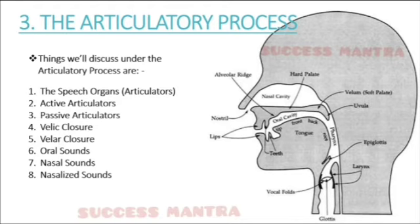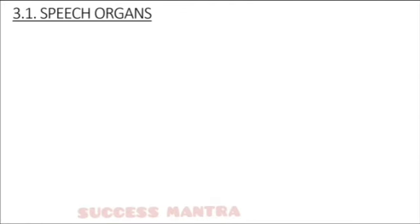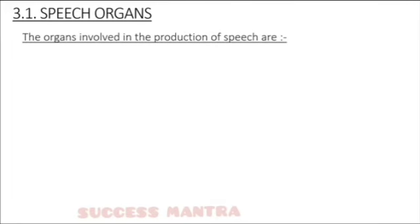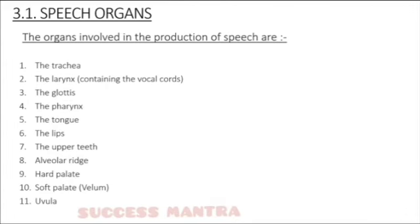These topics are very brief, especially for two-mark questions. The organs involved in the production of speech sounds are called speech organs. They include: the trachea, larynx, glottis, pharynx, tongue, lips, upper teeth, alveolar ridge, hard palate, soft palate (also called the velum), and uvula. Let's look at where these organs are located in the human body.